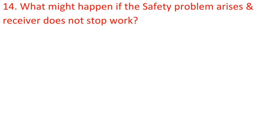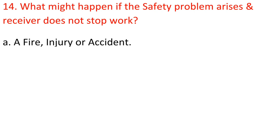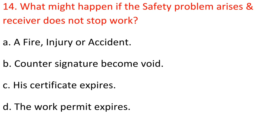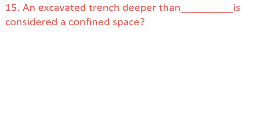Question 14: What might happen if a safety problem arises and the receiver does not stop work? A) A fire, injury, or accident, B) Counter signature becomes void, C) His certificate expires, D) The work permit expires. Answer: A) A fire, injury, or accident.